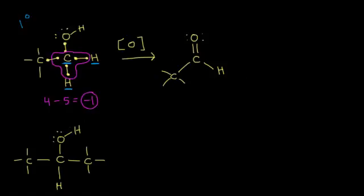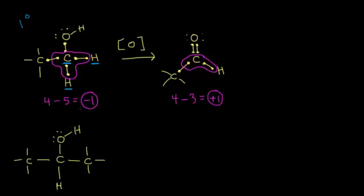Now let's look at what happened to that alpha carbon after oxidation. Over here on the right, assigning an oxidation state to the carbonyl carbon: oxygen beats carbon, carbon versus carbon is a tie, and carbon wins over hydrogen. The carbonyl carbon normally has four valence electrons but is now surrounded by three, so four minus three gives plus one. The oxidation state went from negative one to plus one — an increase in oxidation state is, of course, oxidation. So if you oxidize a primary alcohol one time, you will get an aldehyde.